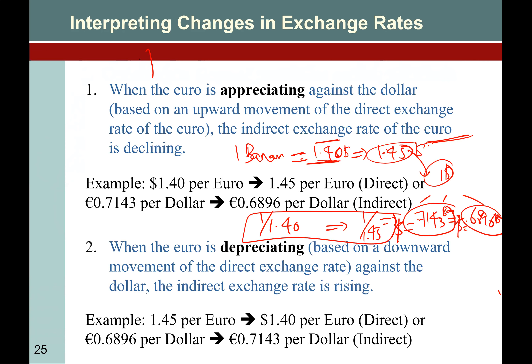So if one thing is appreciating, the other is depreciating. Whose value has increased? Banana value has increased. You have the same $1, but its value has decreased because it can only afford 0.6896 grams of banana now, whereas previously it was buying 0.7143 grams. So we can interpret the indirect quote as: the value of $1 has decreased, and the value of banana has increased. Now switch banana with Euro — the price of Euro has increased.